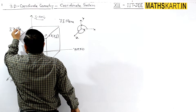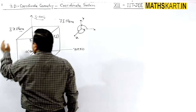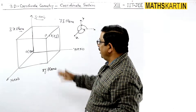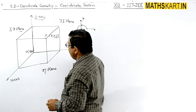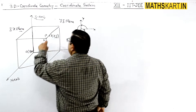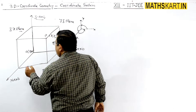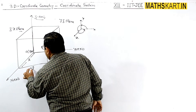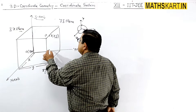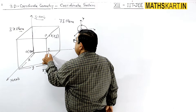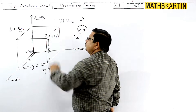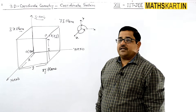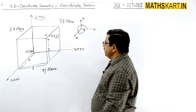Then we have the ZX plane — the wall is known as the ZX plane. So these are the three planes. If there is a point here, we go along the x-axis — x distance, then along the y-axis — y distance, then along the z-axis — z distance. So anybody can reach point P. X, Y, Z are the coordinates.